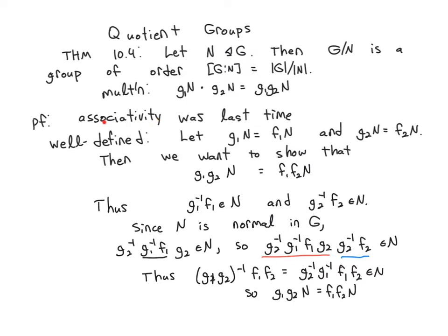So in a previous video, we showed that if you assume this operation was well-defined, then it was associative. However, we did need to check that it was well-defined. And we saw that if you assumed it was well-defined, we discovered that N had to be normal in G. Now we're going to show that if N is normal in G, then this operation is well-defined.